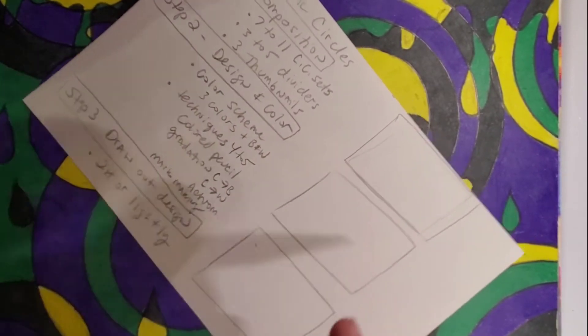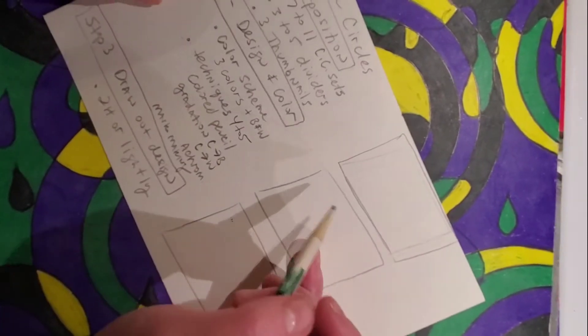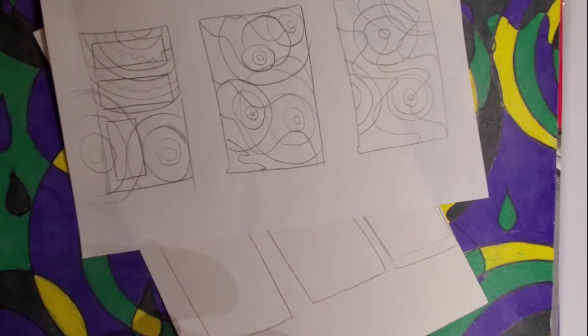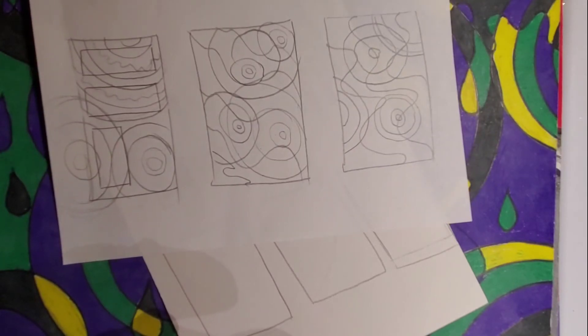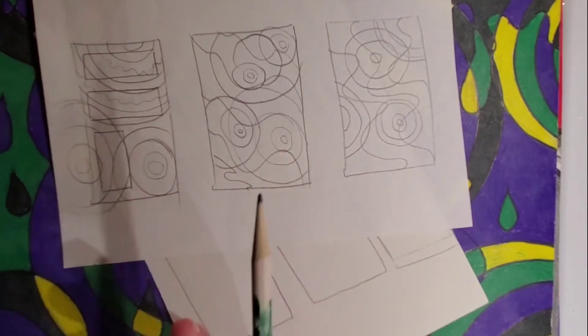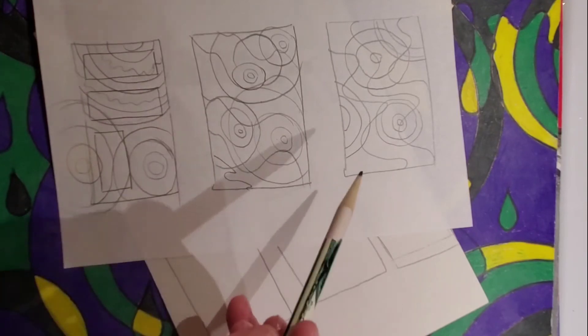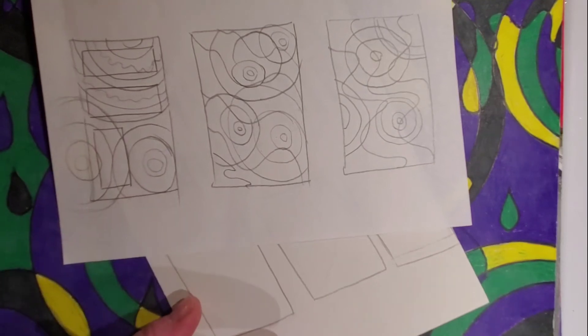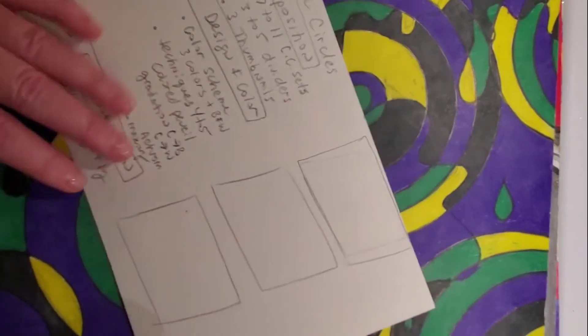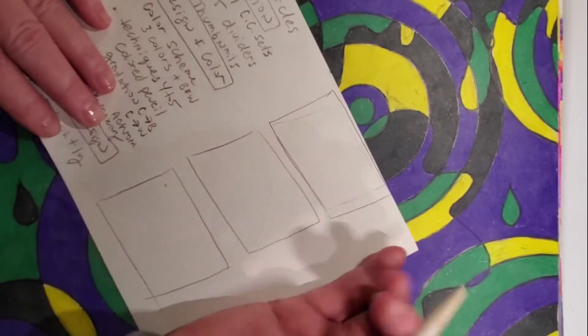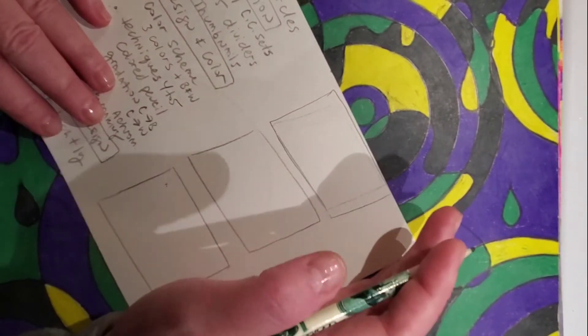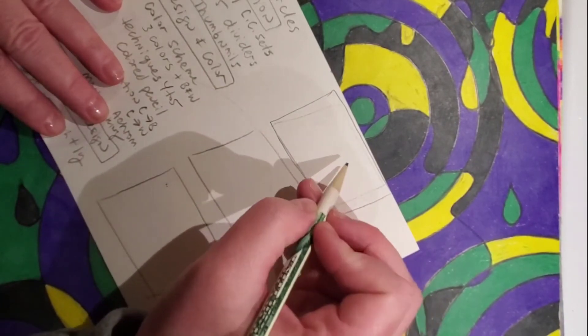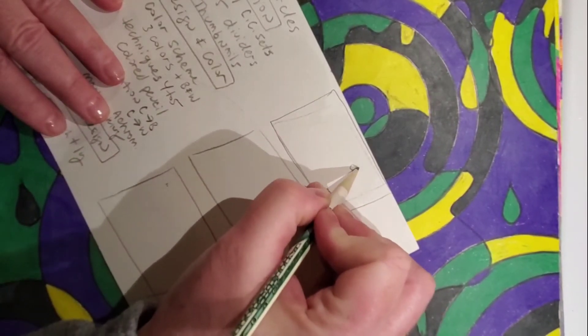After you draw the thumbnail sketch, you're going to work out your color scheme and your techniques, and then finally step three is to draw out the design on the big paper. Let's look at some possible designs. I've done some here on another sheet. What I like about doing thumbnails is that as you do more, you generate more and more ideas. You can definitely do more than three—three is just what I recommend as a minimum.